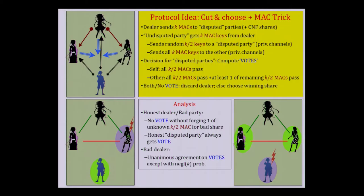In the analysis, two cases arise. If the dealer is honest and one party is bad, the dishonest party cannot get a vote — this is equivalent to forging an information-theoretic MAC without knowing the keys. If the dealer is bad, all parties must unanimously agree on the vote; it doesn't matter which exact value is reconstructed. By a simple analysis, unanimous agreement holds except with negligible probability. This gives us a four-party statistical VSS in a total of two rounds.